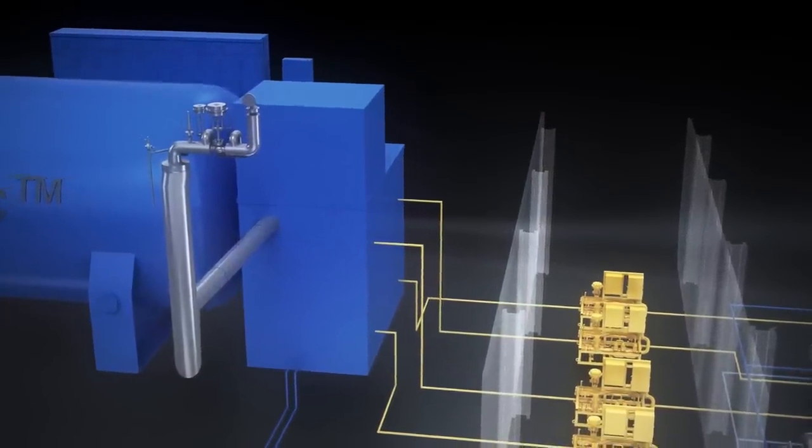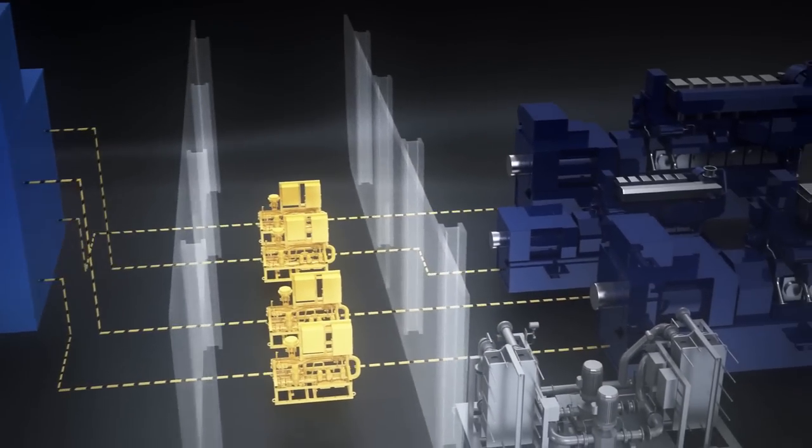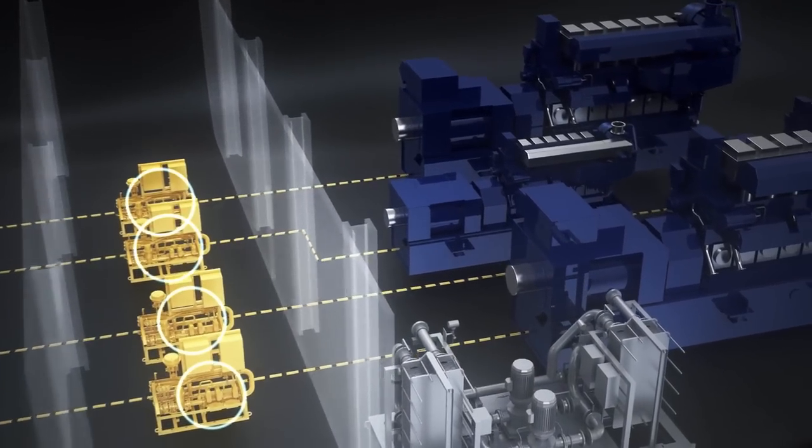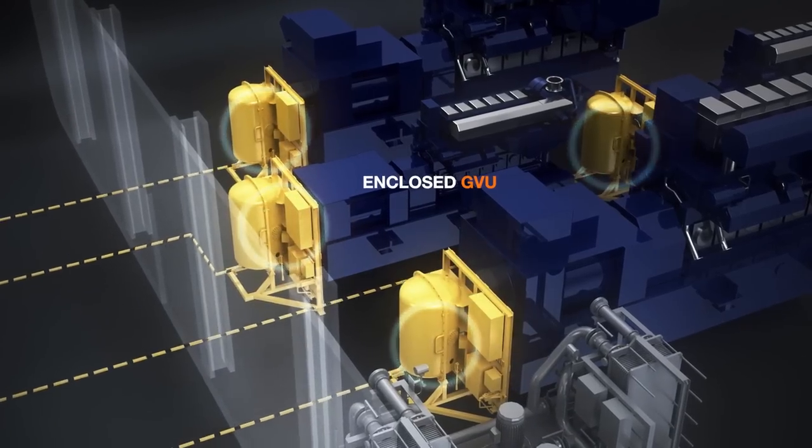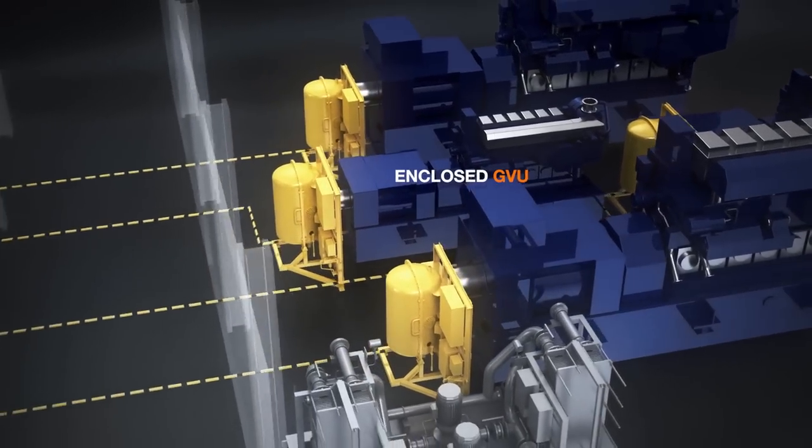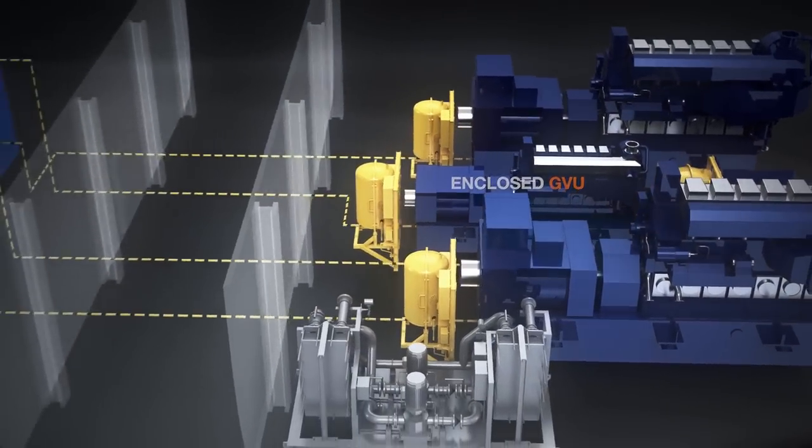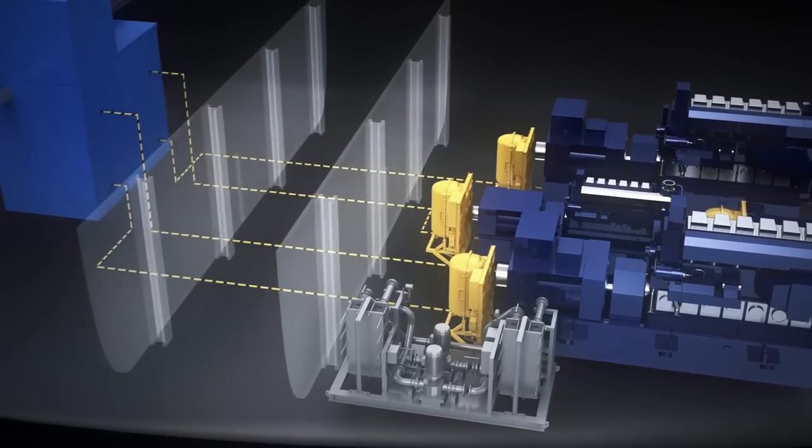The gas valve unit, which has earlier been located in a separate compartment on board the ship, can now be integrated in either an enclosed GVU design, allowing the gas valve units to be placed inside the engine room and close to the engine for fast and reliable gas regulation.